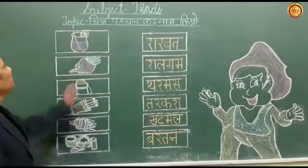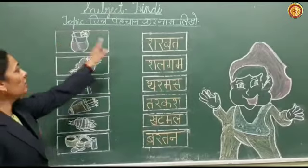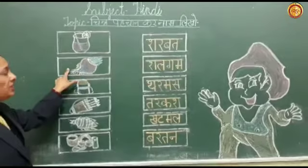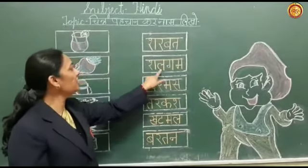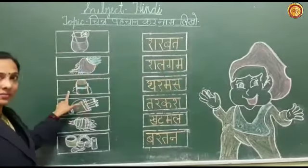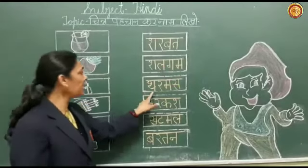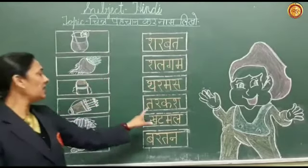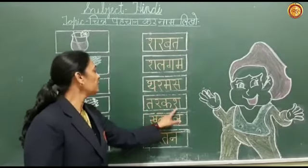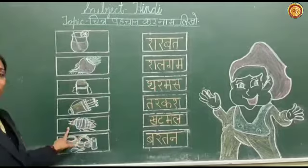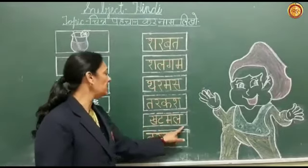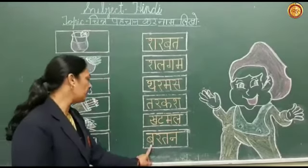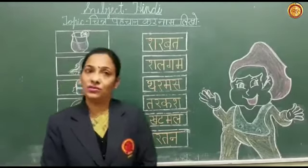Now this is Sharbat — Sharbat ki tasveer hai. Shalagam ki tasveer hai — Shalagam. Tharmas ki tasveer hai — Tharmas. Tarkash ki tasveer hai — Tarkash. Khatmal ki tasveer hai — Khatmal. Bartan ki tasveer hai — Bartan.